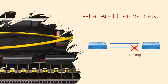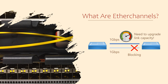Let's say these are both one gig links. What happens if we have high levels of traffic? If there's more than one gig of traffic, this one link wouldn't be able to handle it and some traffic would be dropped. Does the second link help out? Nope, it's blocked — it can't do anything. So we could upgrade the link, but that may be expensive. So let's look at an alternative.